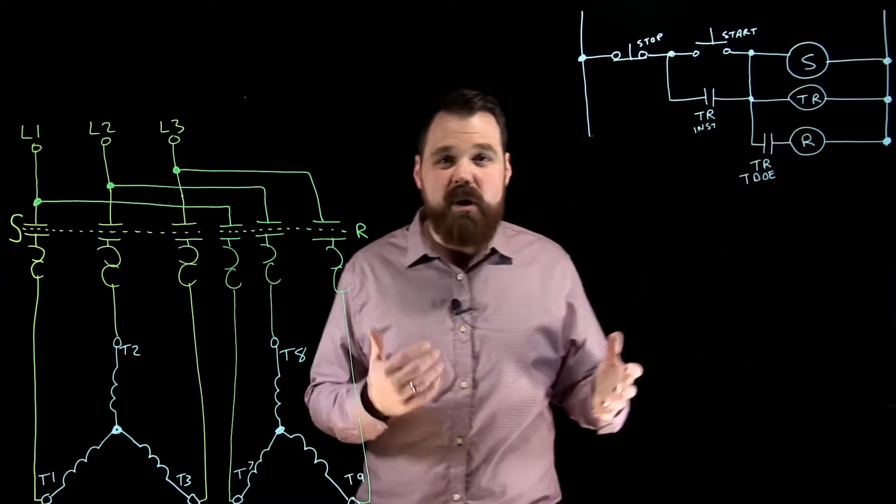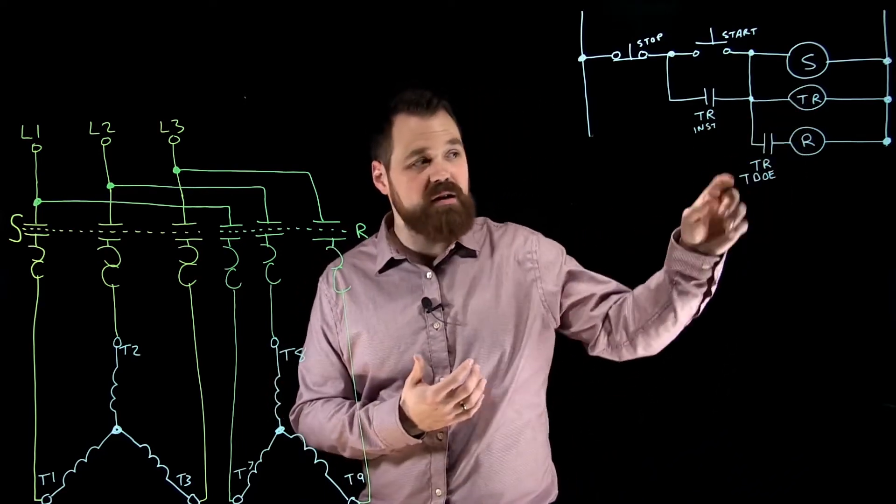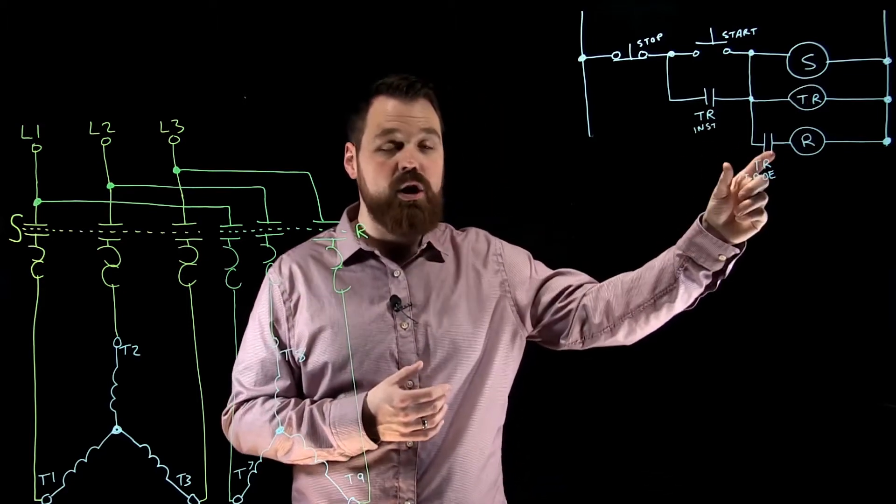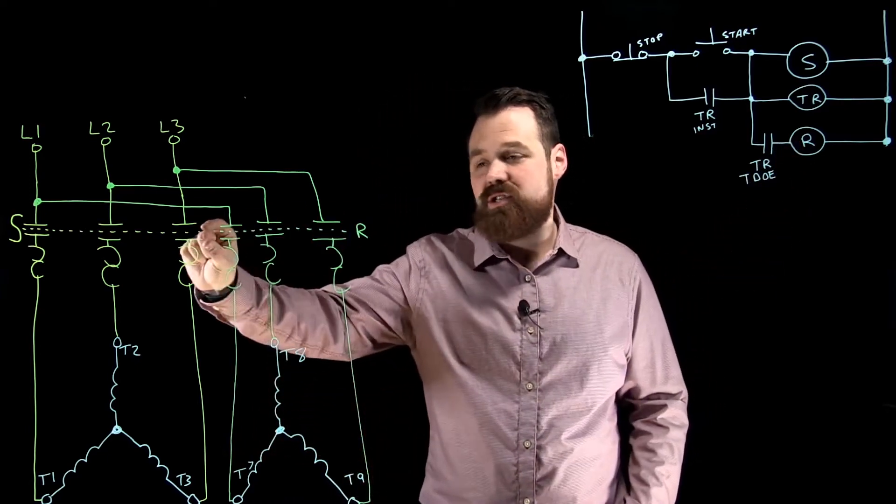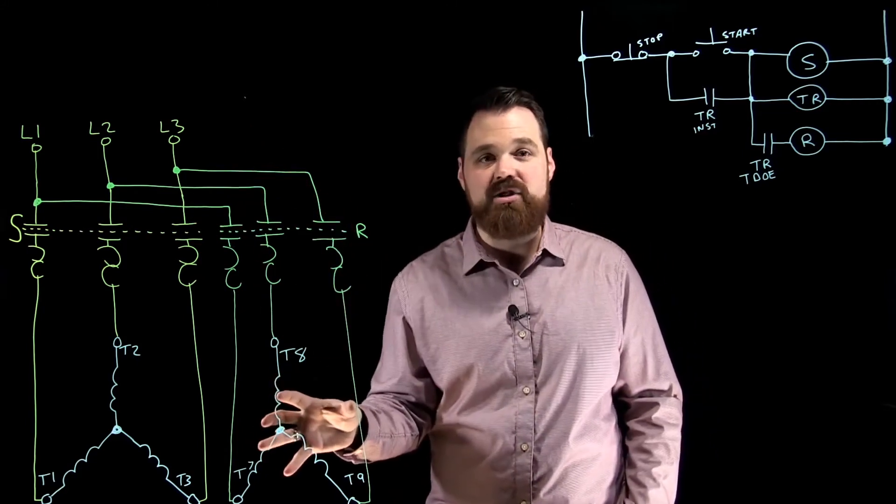After a couple seconds, usually about two seconds we see, the timing relay will finish timing and this TDOE, or time delay on energization contact, is going to close, which is going to put power to my run coil, which is going to change the state of all my run contacts, bringing my other set of windings online.